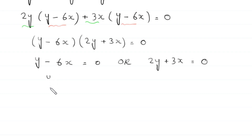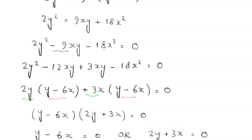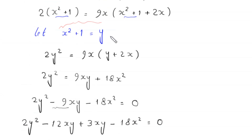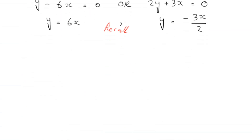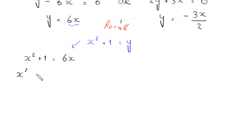From the first equation, we get y equals 6x. From the second equation, we get y equals negative 3x over 2. Recalling that x² + 1 equals y: when y equals 6x, this equation becomes x² + 1 equals 6x, which rearranges to x² minus 6x plus 1 equals 0.